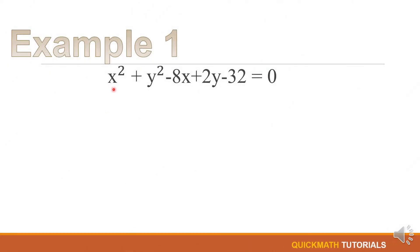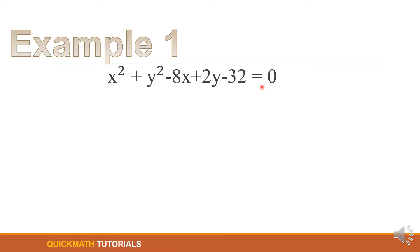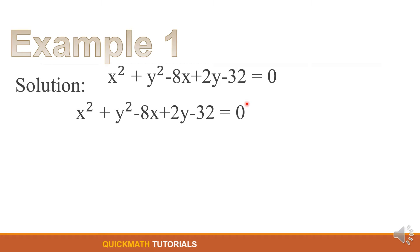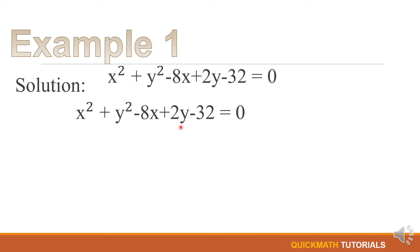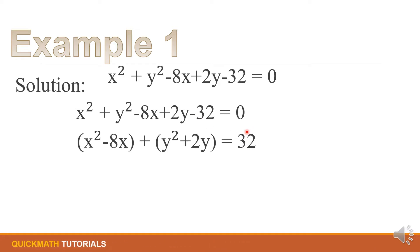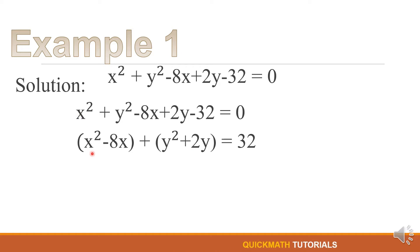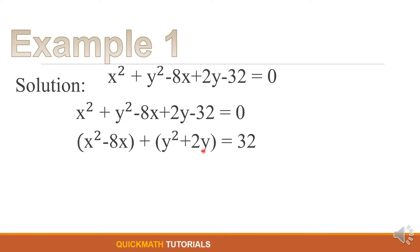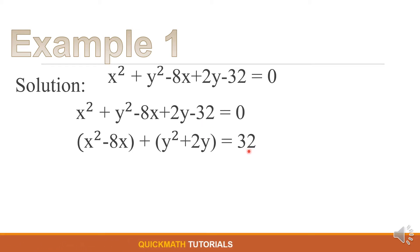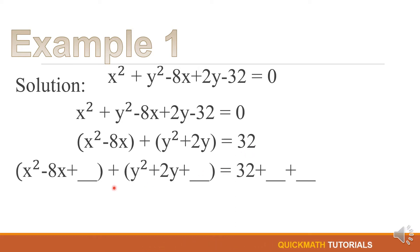For our first example we have x² + y² - 8x + 2y - 32 = 0. For our first step, we will group this equation with the same variable, and for those who do not have a variable — what we call the constant — we will put them to the right side. So we have the group of x: x² - 8x, and the group of y: y² + 2y, and the constant negative 32 becomes positive 32 on the right side.